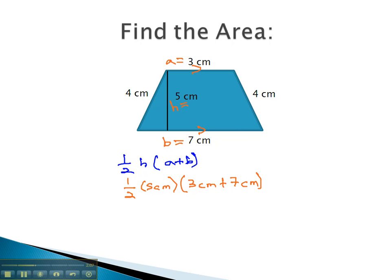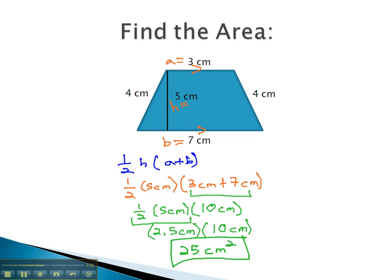Now we can use order of operations to find the area. Doing parentheses first, we have one-half times 5 centimeters. Adding, combining like terms, 3 plus 7 is 10 centimeters. Then finally, multiplying from left to right, half of 5 is 2.5 centimeters times 10 centimeters, and 2.5 times 10 is 25 centimeters squared. The area of this trapezoid is 25 centimeters squared.